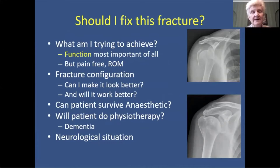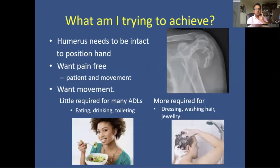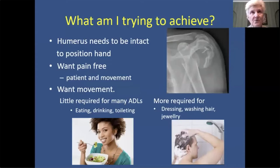Secondly, what about the fracture configuration — can I make it look better, and will it work any better? Thirdly, can the patient survive the anaesthetic and will the patient do physiotherapy — not particularly important for patients with dementia. And finally, what's the neurological situation? The single most important thing for the humerus is that it is intact, because its job at the most basic level is to be a post where you can position the hand in space. After that, you want it to be pain-free and you want movement. Fortunately, little movement is required for many activities of daily living such as eating, drinking, and toileting, but you require more for dressing, washing your hair, jewellery, and full independence.